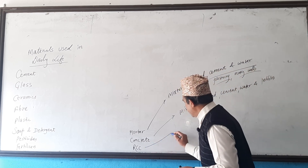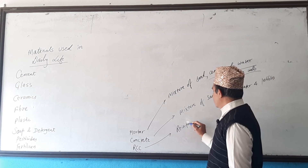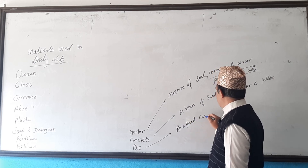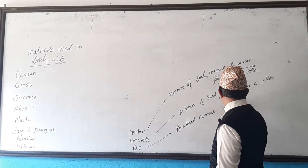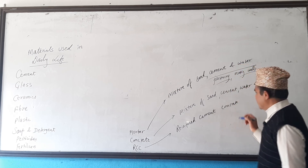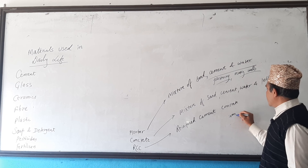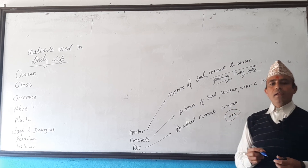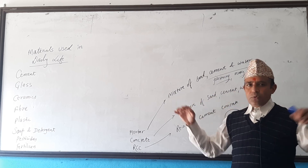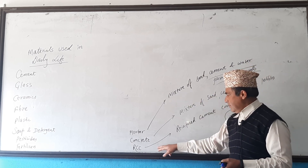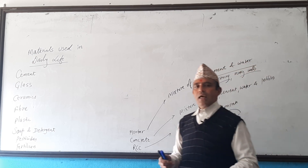What is the full form of RCC? RCC stands for Reinforced Cement Concrete. RCC is concrete plus iron. When doing roofing — what is called a Dhalan — that Dhalan is called RCC Dhalan because it contains both concrete and iron.